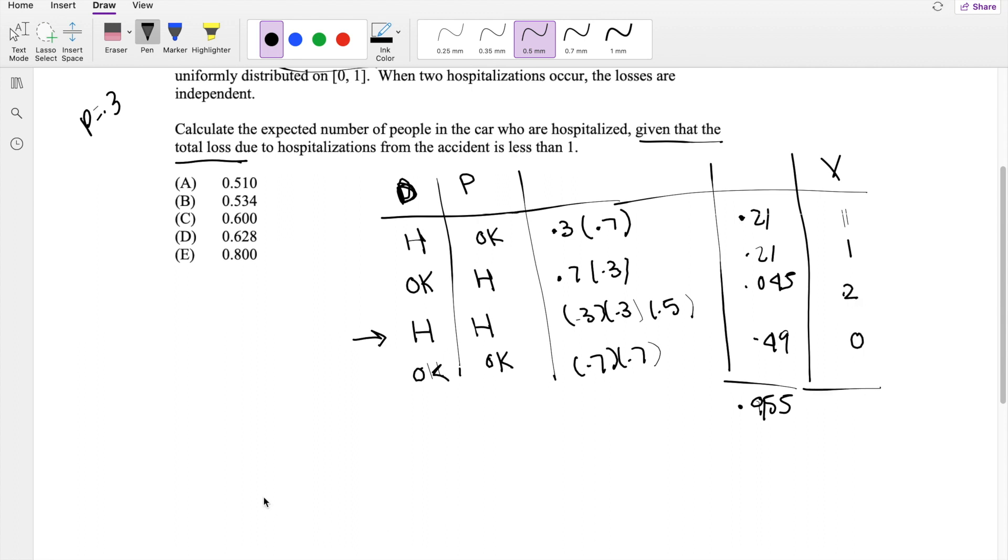So then, now this is a simple expectation problem. Expectation times 0 is going to be 0, so we're going to disregard that. The probability that it's going to be 1 is going to be these two added together. So that's going to be 0.42 divided by the total probability, which is 0.955, plus what is the probability that it's going to be 2? Well, that's going to be equal to 0.045 divided by the total probability, which is 0.955.